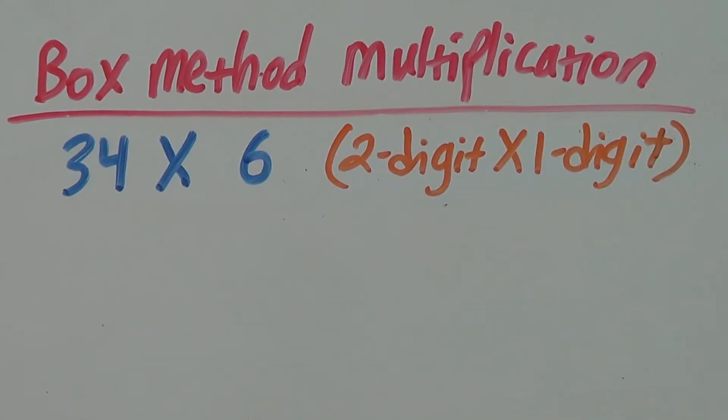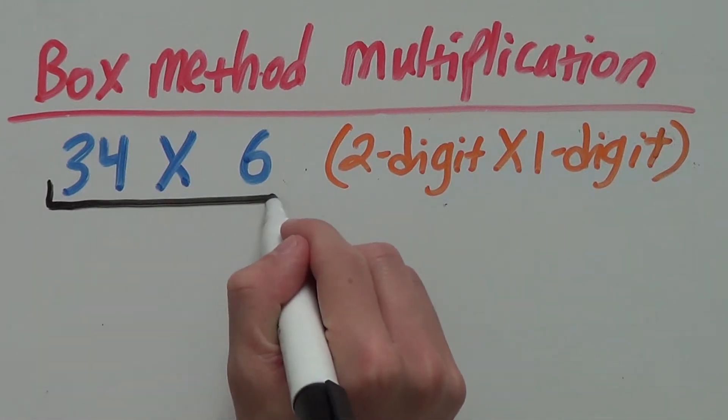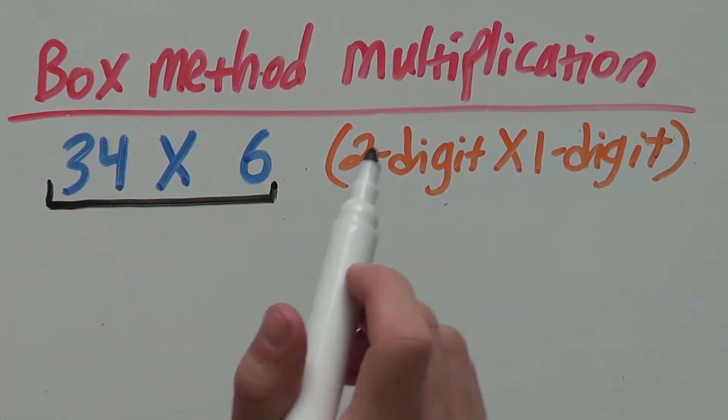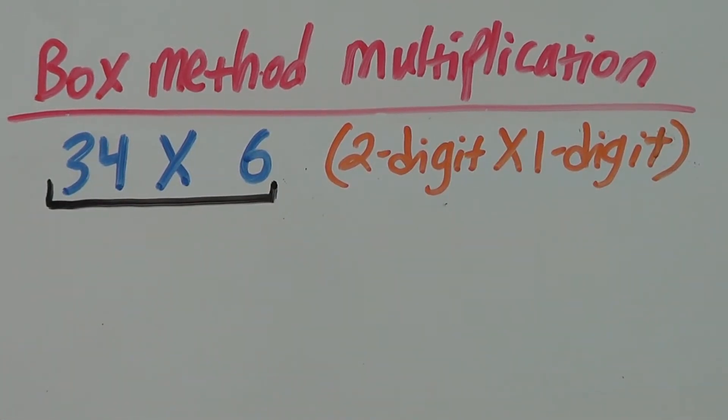For those of you who would like to stick around, I'm gonna show one more example. For this example, we have 34 times 6. Now, this is quite a hard problem to multiply. Hopefully, using box method multiplication will make it easier for you.